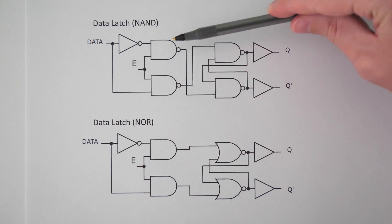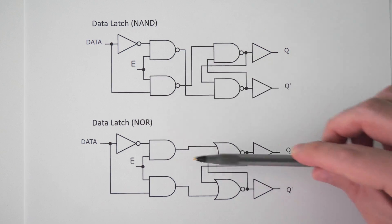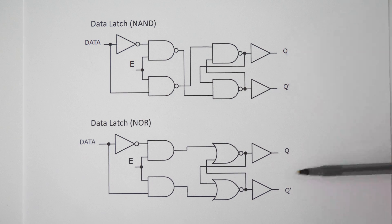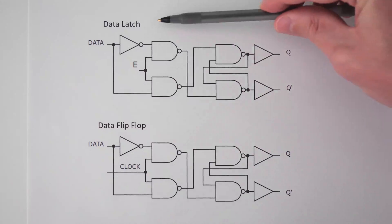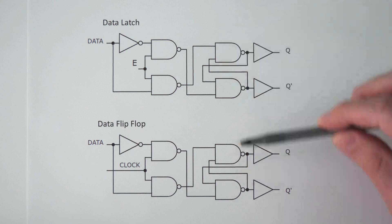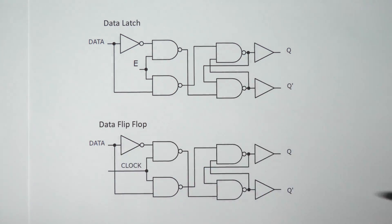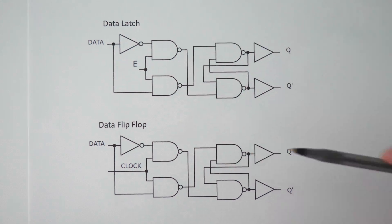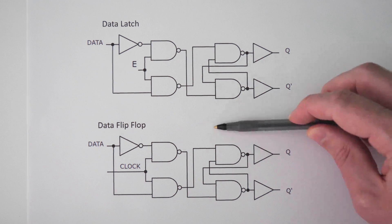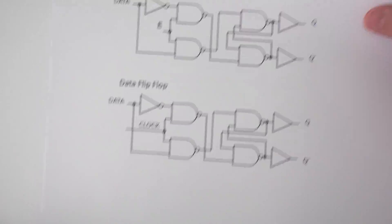The data latch we were just looking at was built using four NAND gates, but a data latch can also be built using two NOR gates and two AND gates — these are basically equivalent circuits. This circuit is the data latch we were just looking at, and this circuit is a data flip-flop. The only difference between them is that rather than an enable pin, we have a clock input. This clock input is supposed to be an edge-triggered clock pulse, and that's the difference between a data latch and a data flip-flop. If you're interested in learning more about flip-flops, our next video will cover all of it — you can click right here.